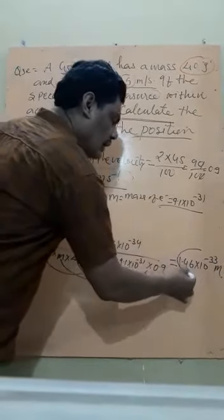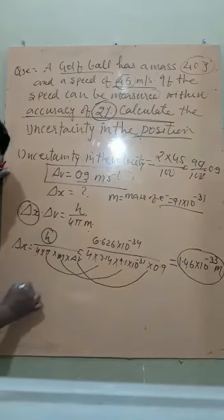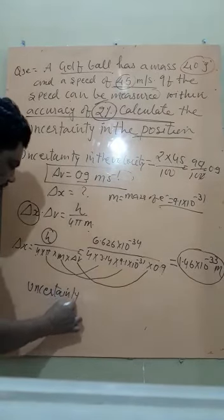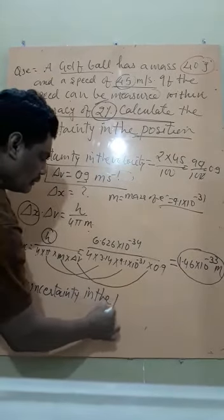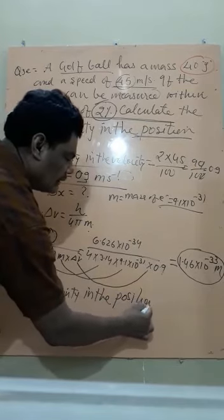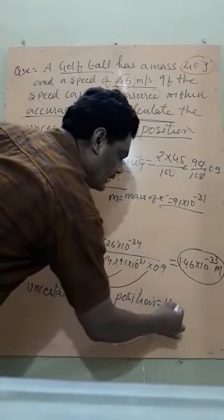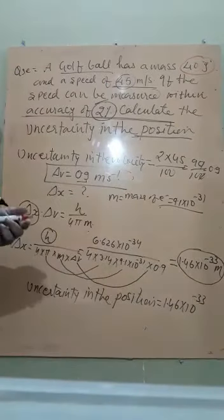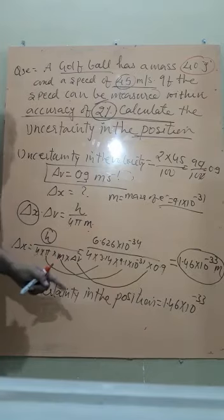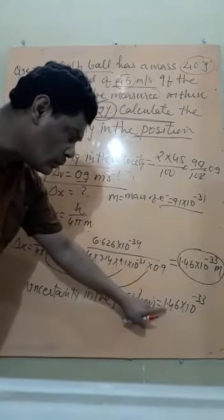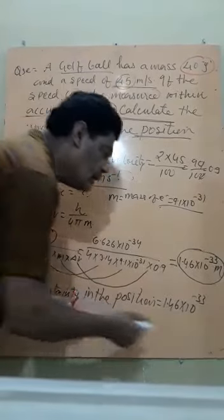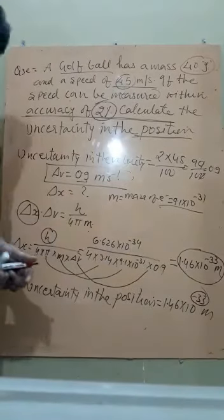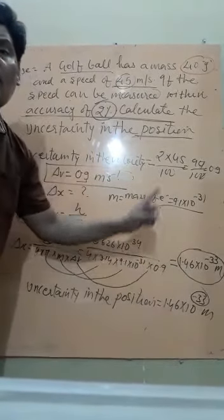What is it? It is 1.46 into 10 to the power minus 33. That is whatever its original position, now it will deviate by 1.46 into 10 to the power minus 33 meter. So is it measurable? 10 to the power minus 33 is non-measurable.